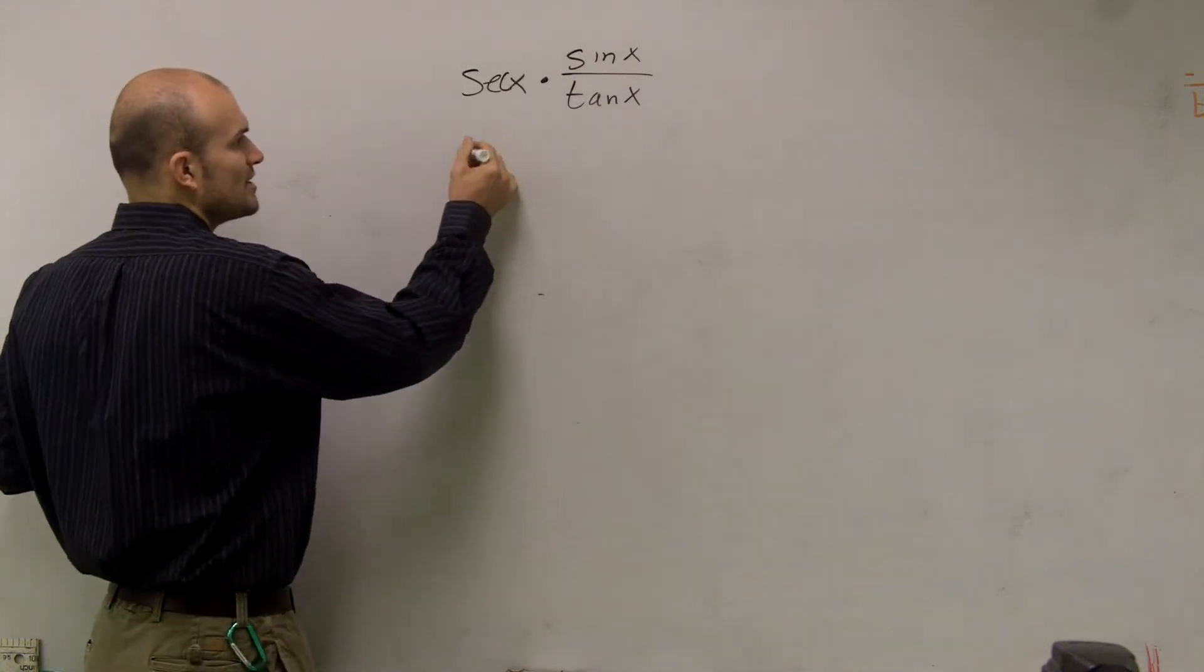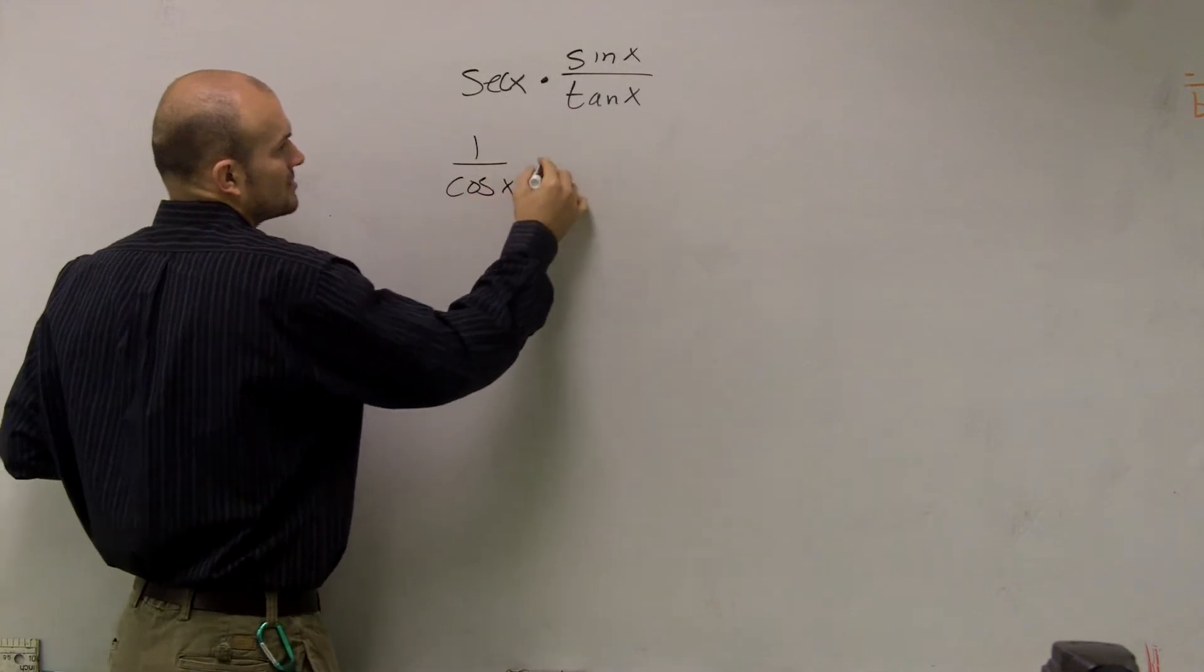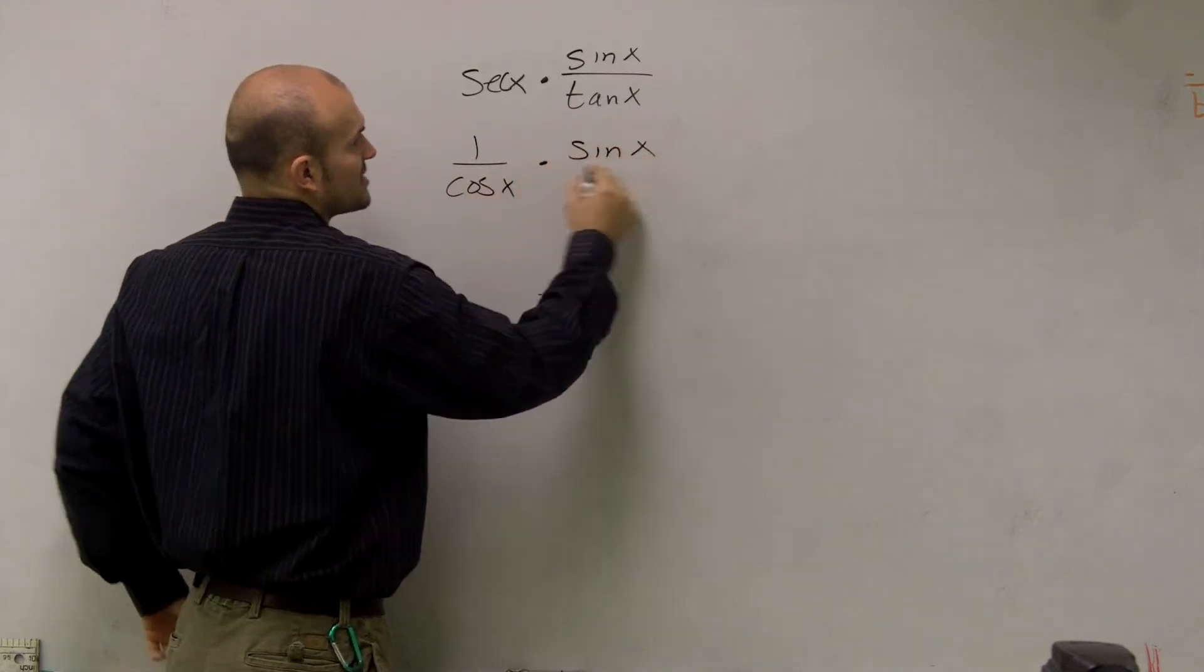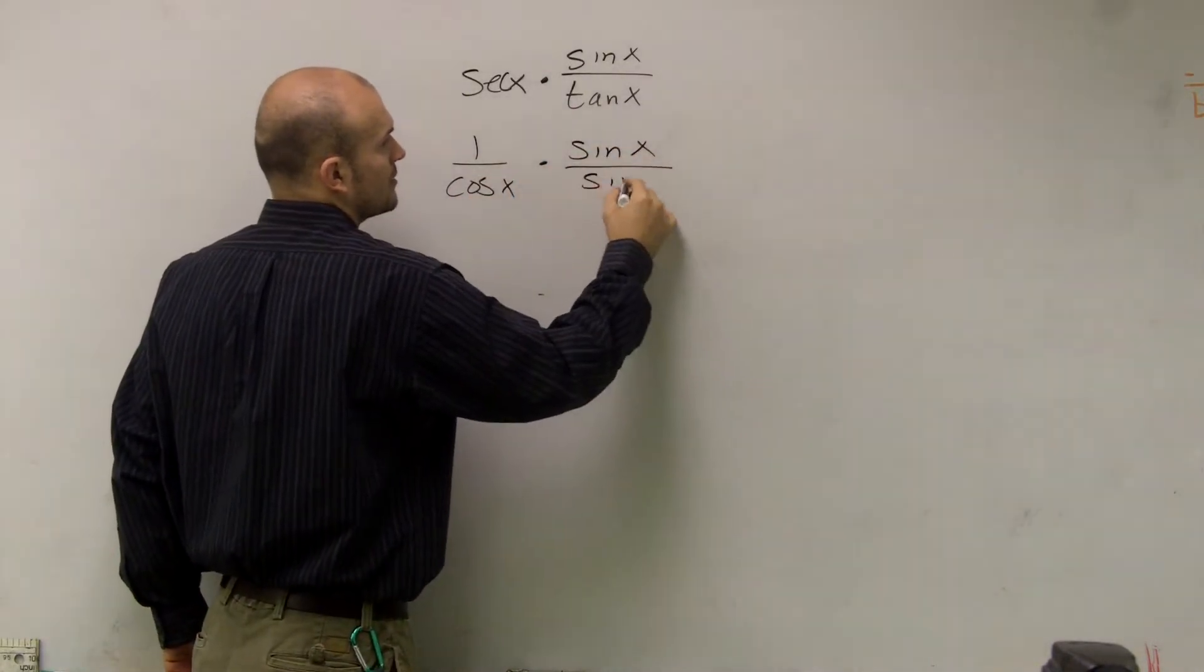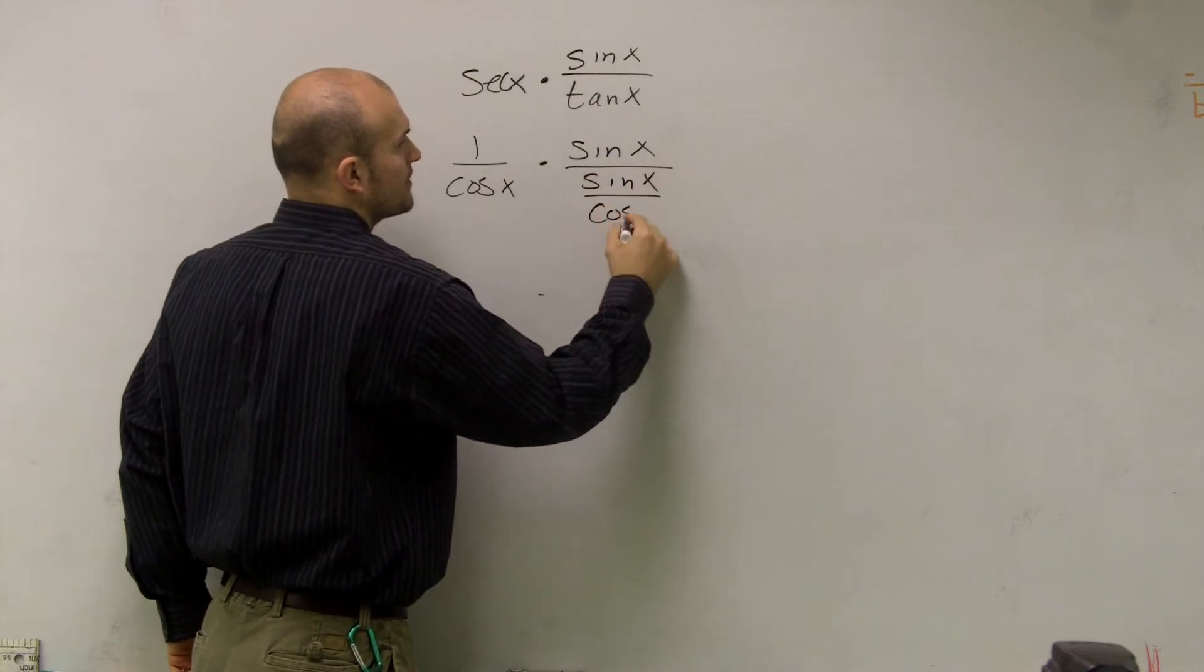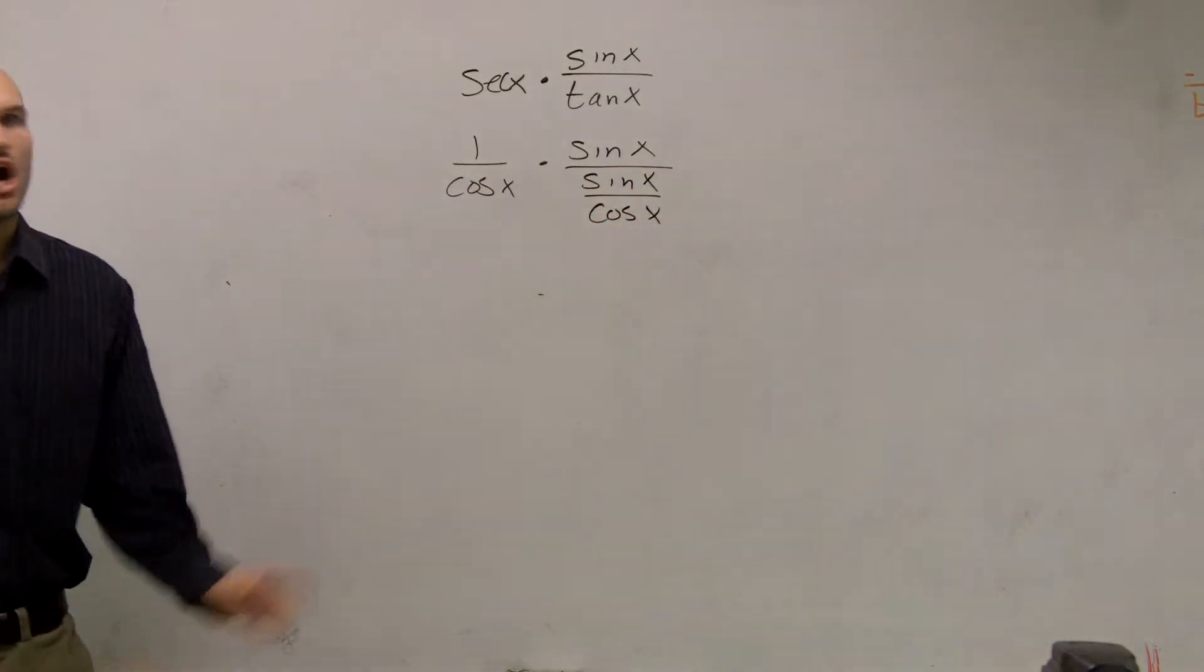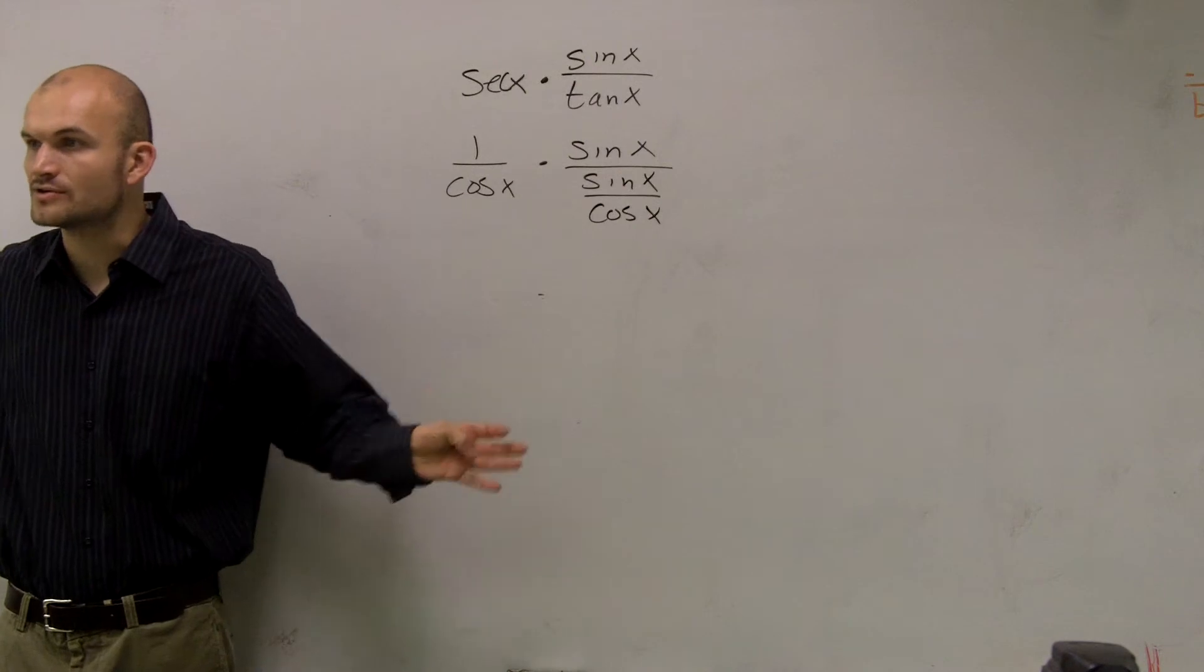So what I'll do is I'll transform this to 1 over cosine times sine of x, all over sine of x over cosine of x. All I did was I just changed everything to sines and cosines.